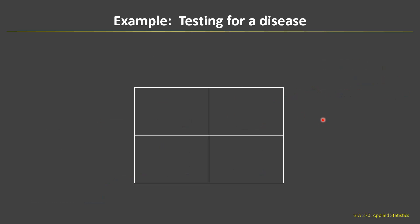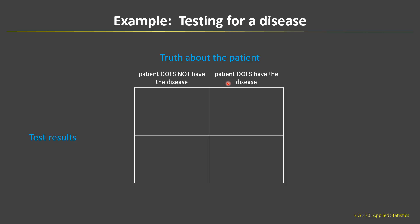Here's an example where we would be testing for a disease. The truth about the patient is either that the patient does not have the disease or the patient does have the disease. We take a blood test and get results: either negative, saying the patient doesn't have the disease, or positive, saying the patient does. If the patient does not have the disease and gets a negative test result, that's the correct result — that's good.